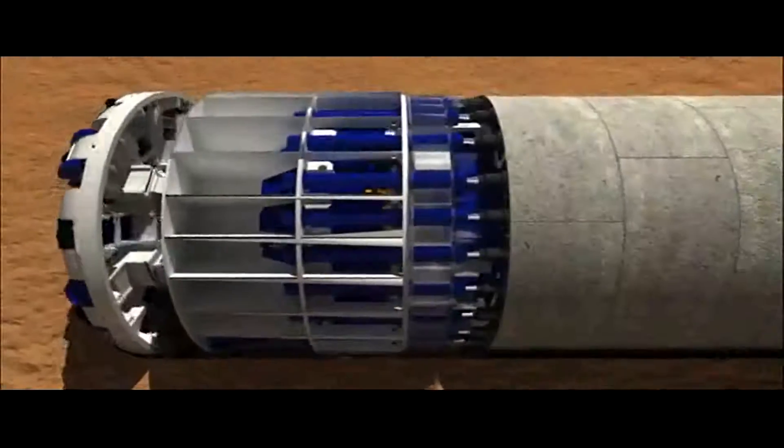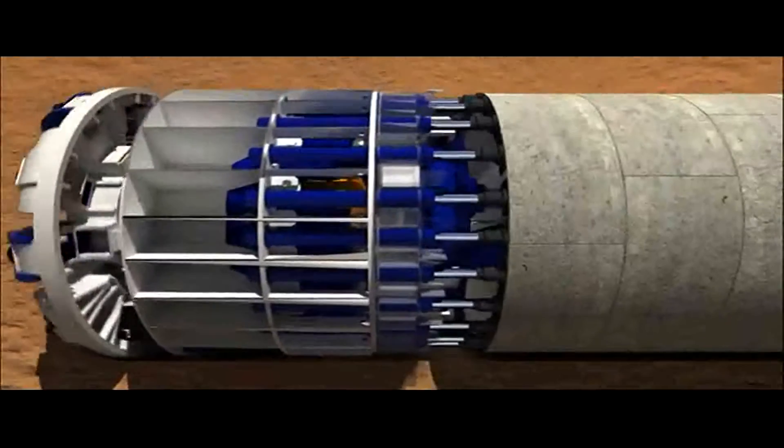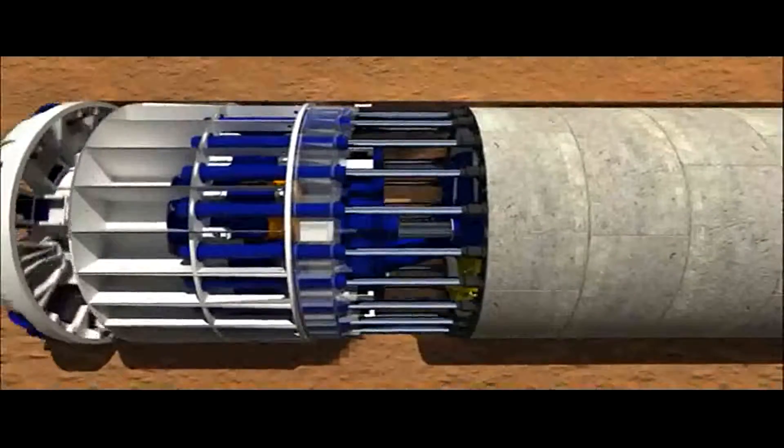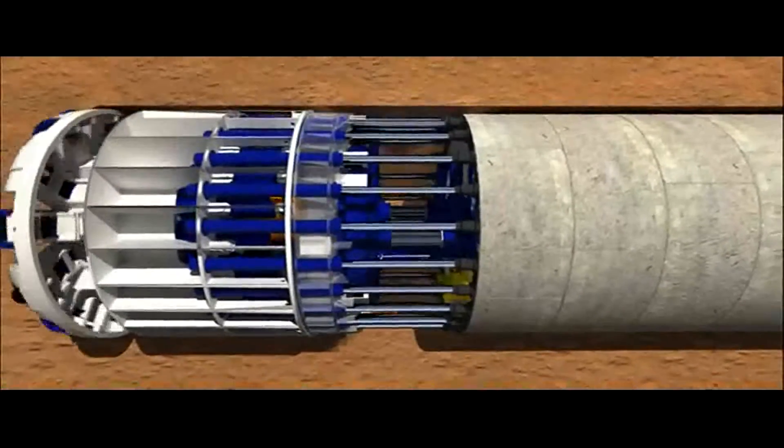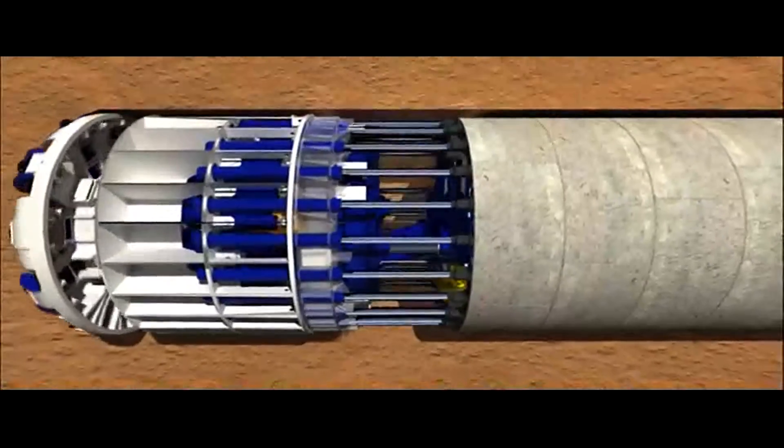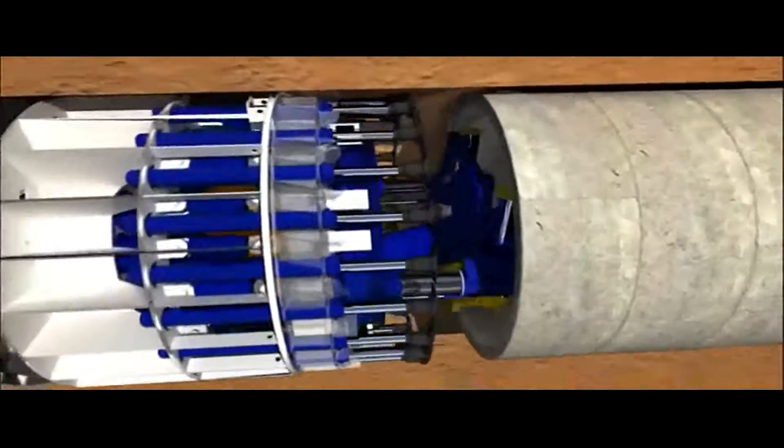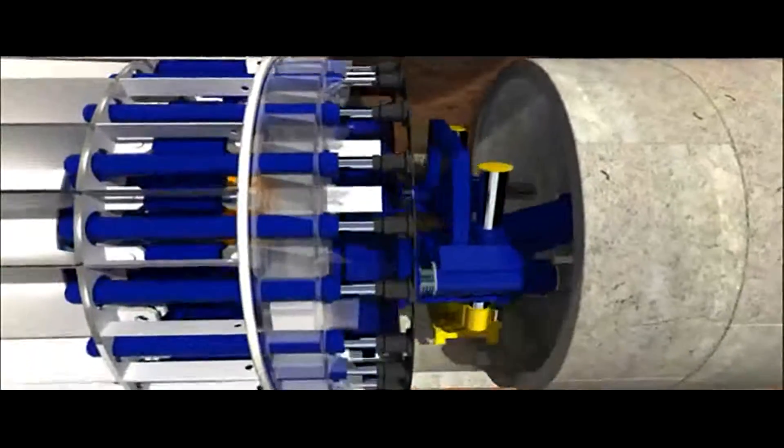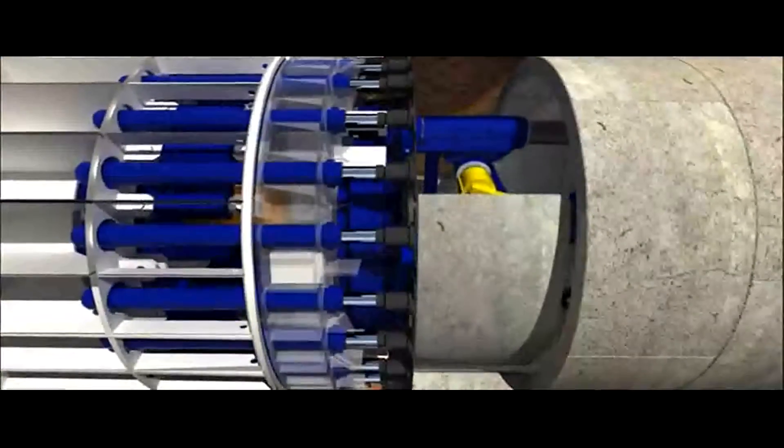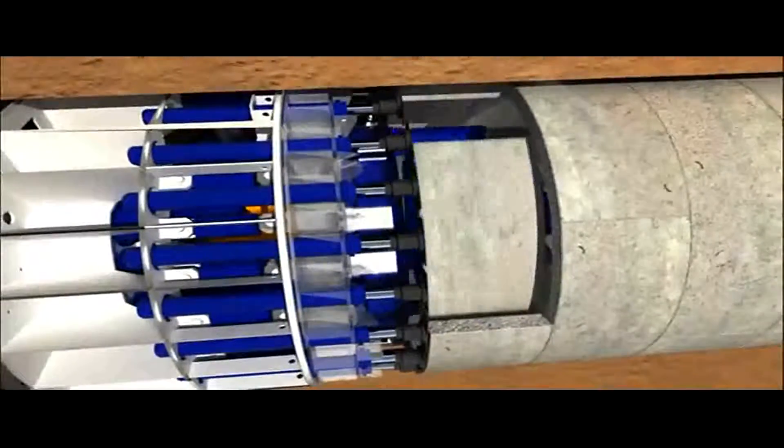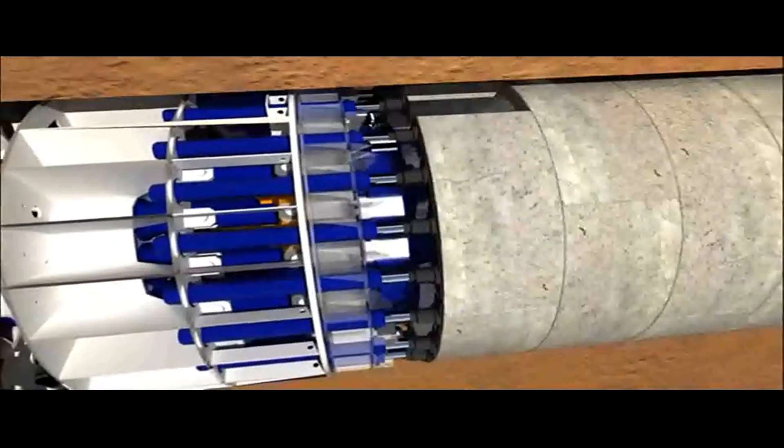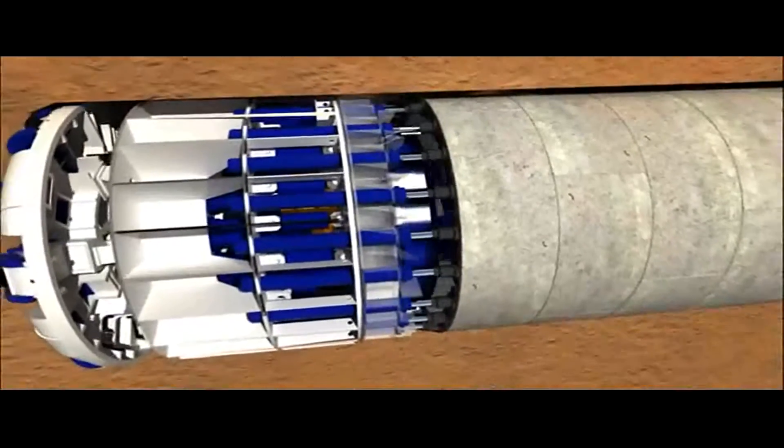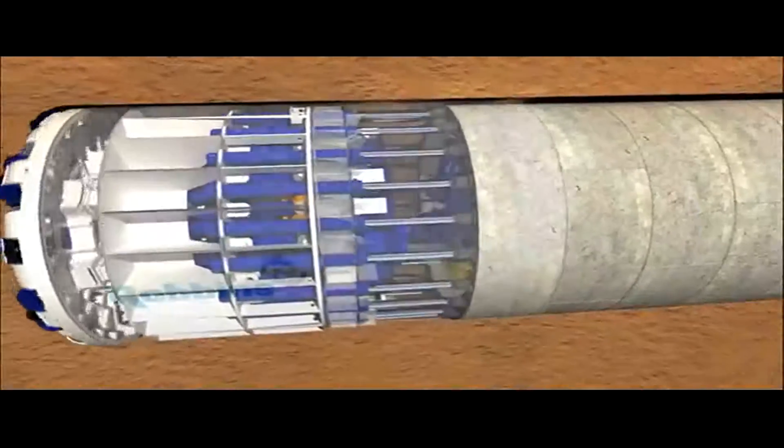During an EPB boring stroke, the cutter head turns and thrust cylinders extend to push the machine forward. These cylinders transfer the thrust to the cutter head by reacting against the tunnel lining. After each TBM advance, the thrust cylinders retract. Then, another ring of segments is placed by a segment erector and a new boring stroke begins. Since the cylinders react against the tunnel lining, it is not possible to erect the lining simultaneously while boring. Thus, tunnel boring and tunnel lining erection are sequential operations.